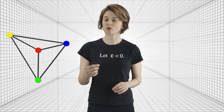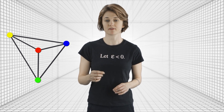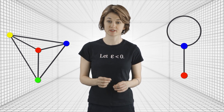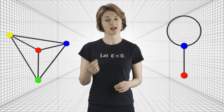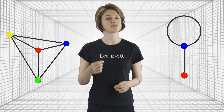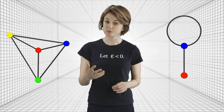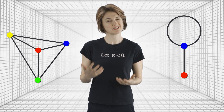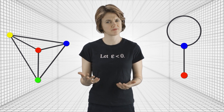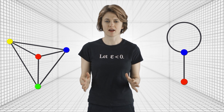Notice that we can only do this on graphs without loops. If there's an edge which connects a vertex to itself — a loop — then it's impossible to color it. So we'll pretty much ignore graphs with loops.